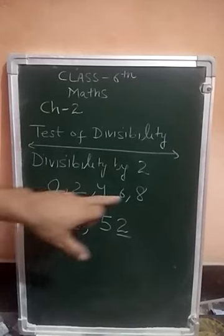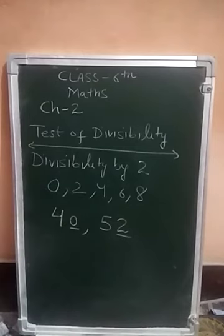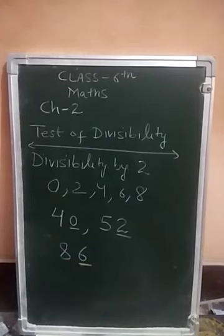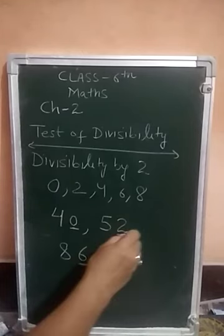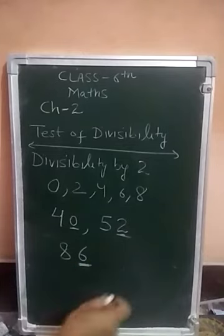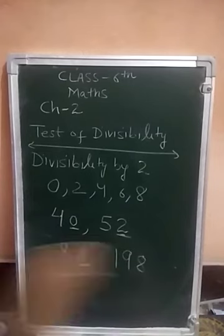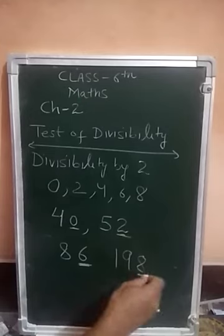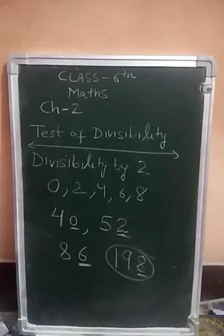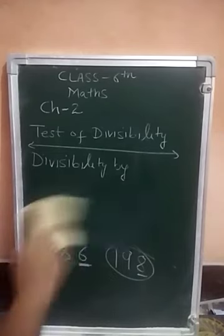So if at the 1's place of any number 0, 2, 4, 6, or 8 is present, then that number is divisible by 2. For example, 86 has 6 at 1's place, so it is divisible by 2. Similarly, 198 has 8 at 1's place, and 8 is divisible by 2, so 198 is also divisible by 2.